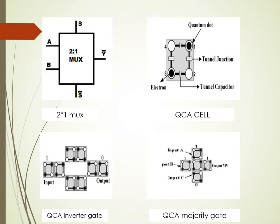Based on that cell structure, two major gates are developed: the QCA inverter gate and the majority gate. By using the logic of these gates, we are implementing the multiplexer circuit.